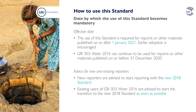The new GRI 303 Water and Effluence 2018 standard will be effective for reports or other materials published on or after 1 January 2021. Its use is required from that date, but earlier adoption is encouraged. GRI 303 Water 2016 can continue to be used for reports published on or before 31 December 2020. Since the new standard represents leading best practice on water stewardship reporting, existing users of GRI 303 Water are advised to start using the new standard right away, even if they cannot yet meet all requirements for core or comprehensive. An organization reporting on GRI 303 Water and Effluence for the first time is advised to start reporting with the new standard.